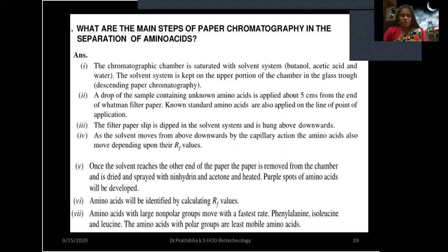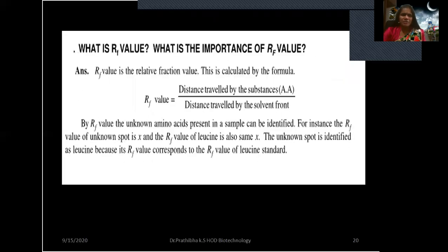Amino acids with large non-polar groups like phenylalanine, isoleucine, and leucine move at the fastest rate, while amino acids with polar groups are the least mobile. The RF (relative fraction) value is calculated by the formula: RF value = distance traveled by the substance (amino acid) divided by distance traveled by the solvent front. By comparing RF values, unknown amino acids in a sample can be identified. For instance, if the RF value of an unknown spot matches the RF value of leucine, the unknown is identified as leucine.